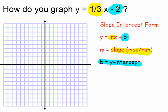So in order to graph this, I'm going to start with my y-intercept of negative 2. So go down 1, 2, and that means that the line is going to cross the y-axis at negative 2.